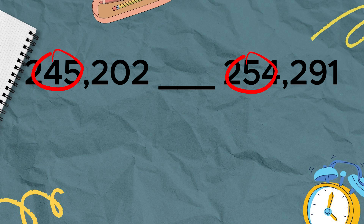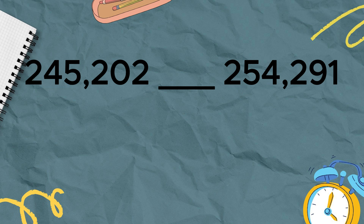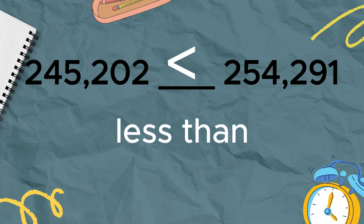Keep this in mind: stop comparing when the digits are different. Which of these two digits is greater, given that 4 and 5 are different? Yes, that's right — 5 is greater than 4. 4 is the lesser number compared to 5. So if you compare these two numbers, you will see that 245,202 is less than 254,291, because 4 is a smaller number than 5.